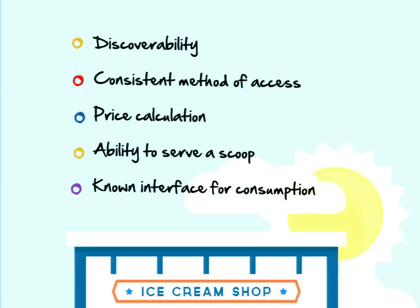There are a lot of components there. Part of what the plugin system does is provide an abstract pattern for all of those things — things like discoverability. When I ask for vanilla, how does the system find it in the cooler? They've got some way to discover it and a consistent method to access it. It would be really silly if an employee had a different way to scoop every kind of ice cream — if every tub had a different lid, and you had to figure out how the lid for chocolate works versus strawberry rhubarb.